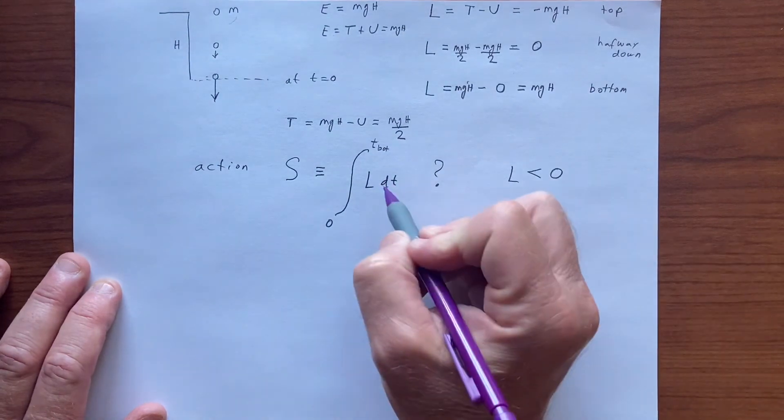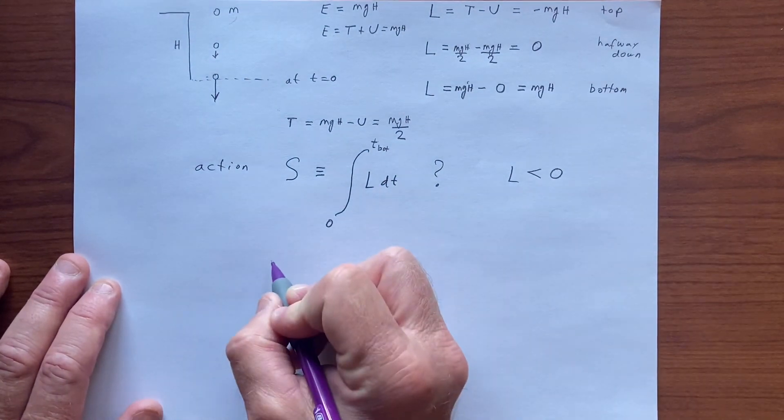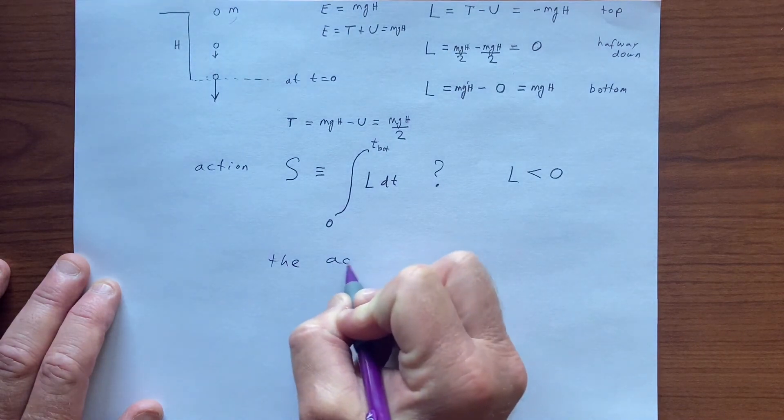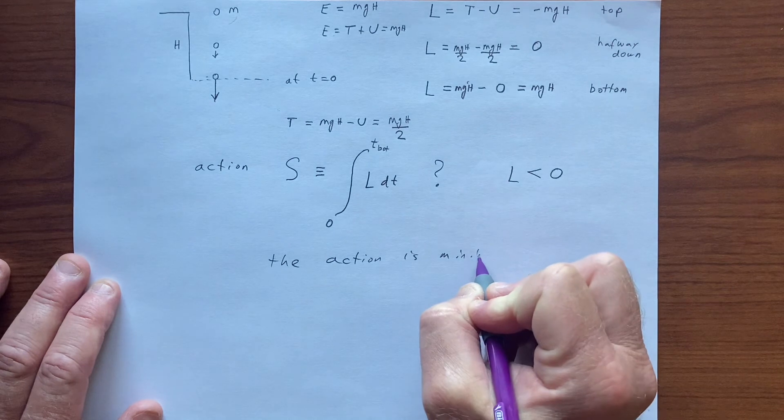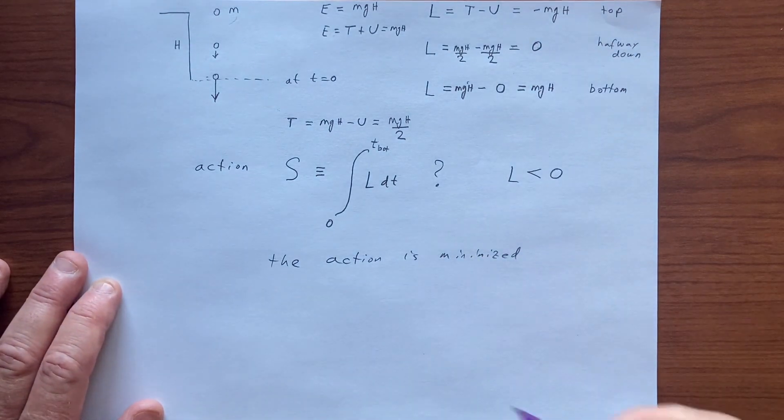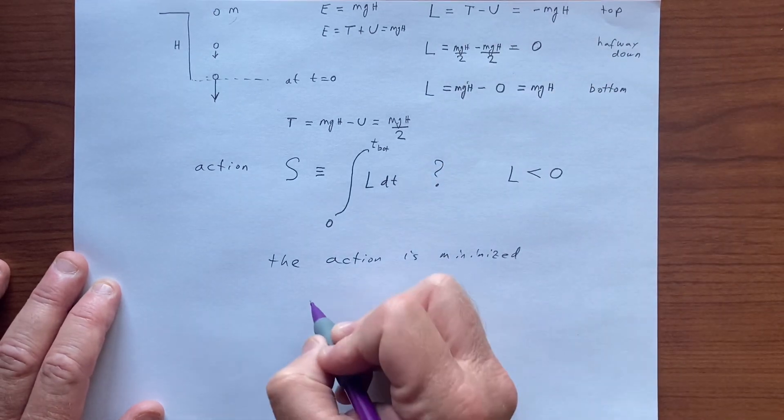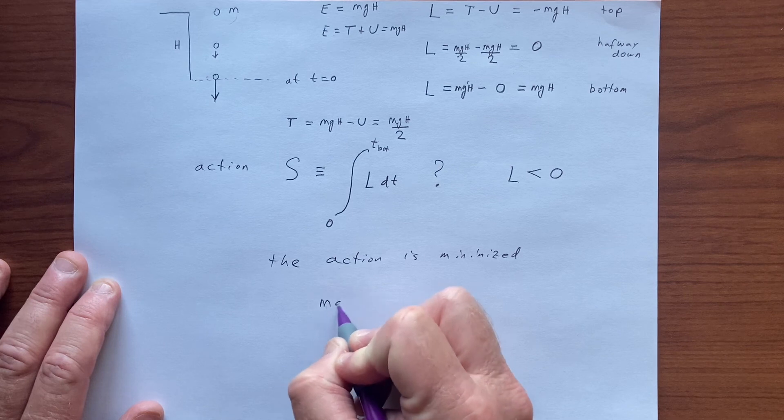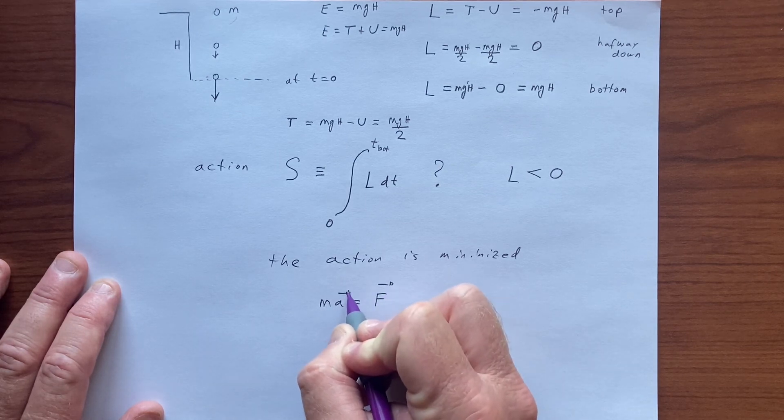So we'll have some negative quantity here that we integrate for longer time. So the action is minimized, and ultimately we want to understand more why that is, and it's going to simply reduce to the fact that ma equals f.